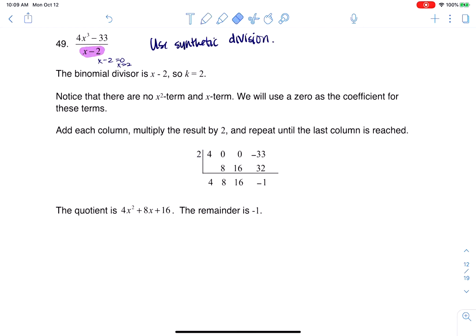Then we have to put the coefficients of the numerator, and you can see 4 and negative 33, but there's some degrees missing. There's no quadratic term and no linear term. So let me rewrite this. Basically, my numerator is really 4x cubed, plus 0x squared, we have no linear terms, and then minus 33. We need those zeros there for placeholders, and that's what you need to do in order for synthetic division to work.